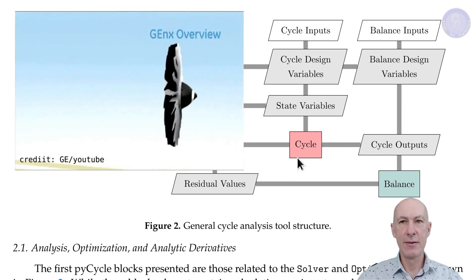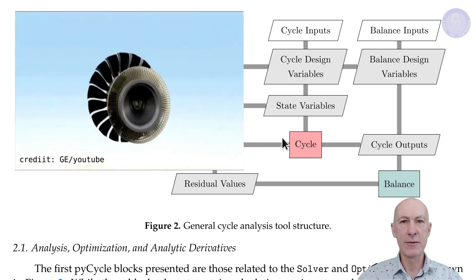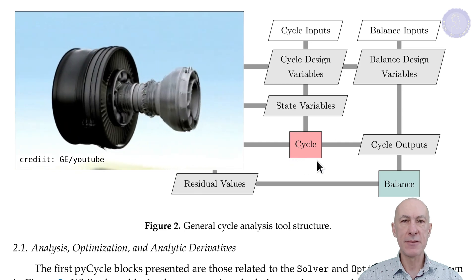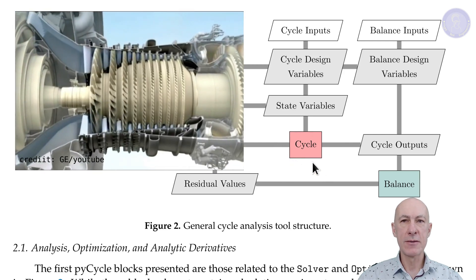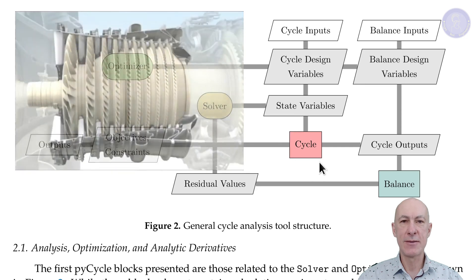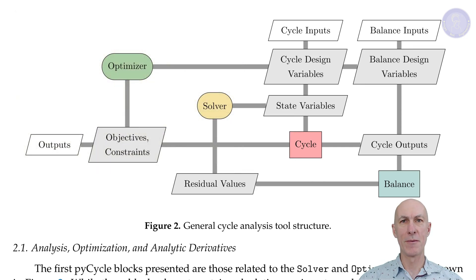It is here that we define how many turbines and compressors we have, how many shafts, define the combustor, mechanical losses, extractions, bleeds, etc. The balance block is where we will enforce the physical dependencies and design rules.